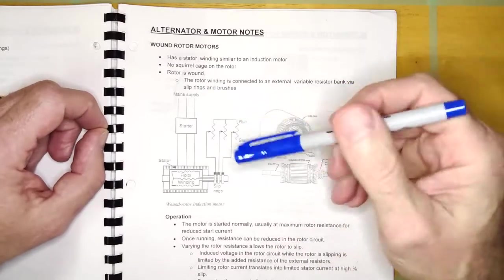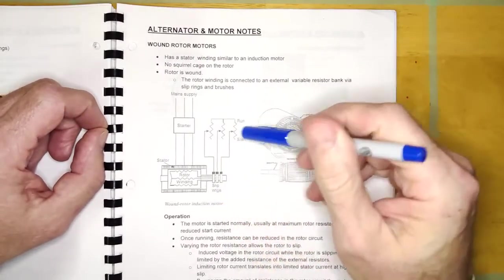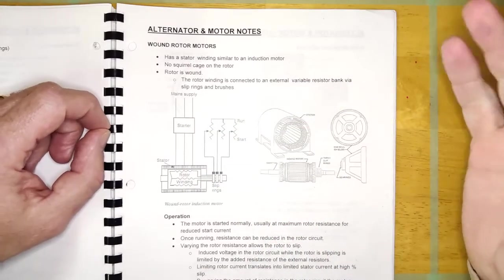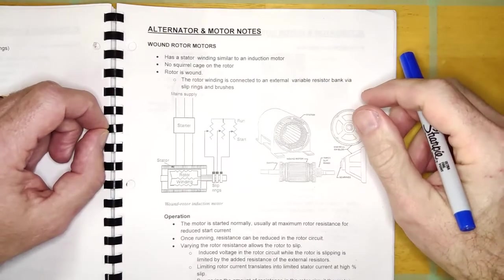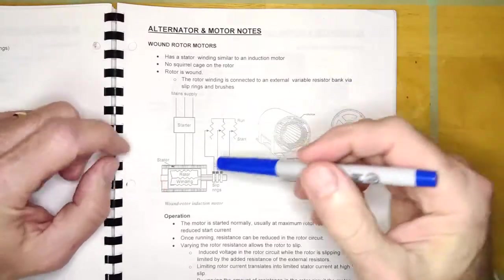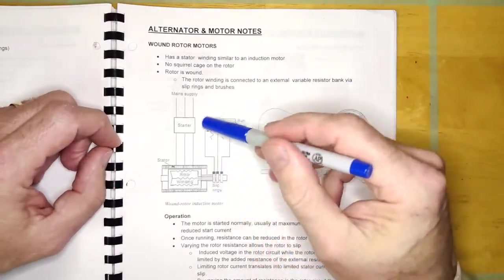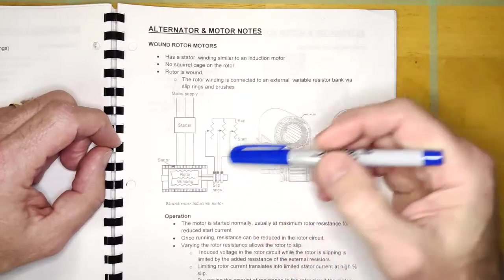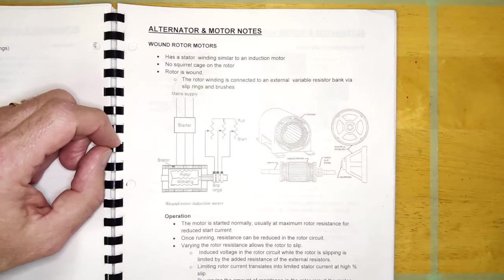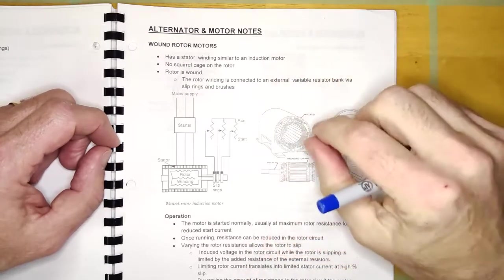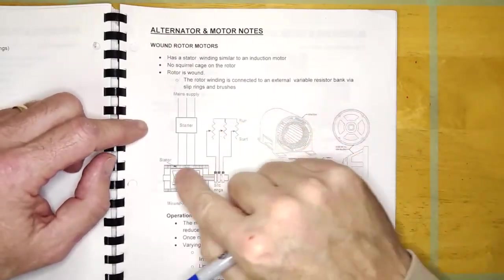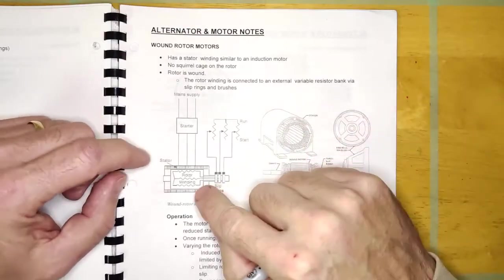Now, the way this thing works, guys, is this thing is going to get started up. It's going to have a sync speed of however many poles it has. If it's a two-pole, it's going to have a sync speed of 3,600. If it's a four-pole, it's going to have a sync speed of 1,800. But because there's this external resistor bank here connected to the rotor, you can actually vary the resistance of the rotor. And so, you can actually allow this thing to slip a lot and still have limited rotor current because you've added a bunch of resistance to the rotor circuit externally.